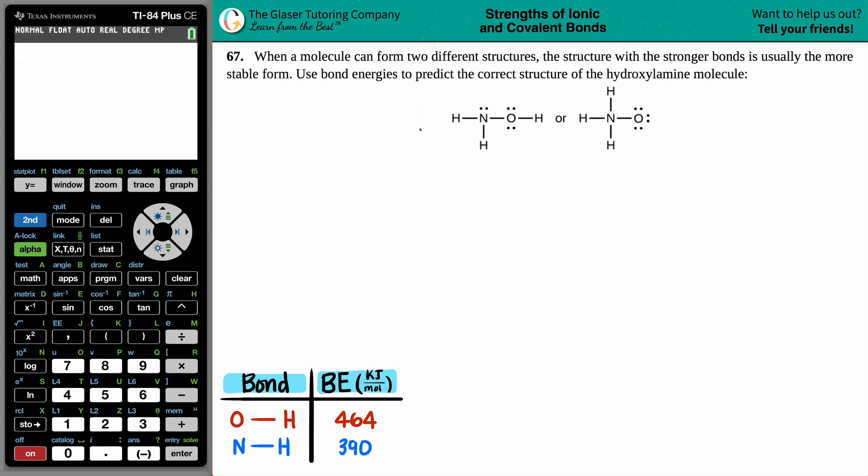Number 67. When a molecule can form two different structures, the structure with the stronger bonds is usually the more stable form. Use the bond energies to predict the correct structure of the hydroxylamine molecule.